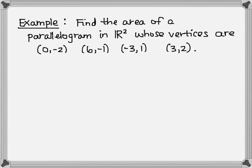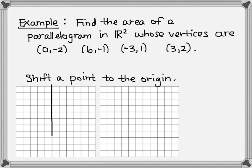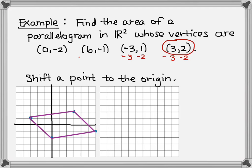Here's our first example. We want to find the area of a parallelogram in R2 whose vertices are (0, −2), (6, −1), (−3, 1), and (3, 2). Step one: shift a point to the origin. I'm going to graph the parallelogram first to see what it looks like. I connect the four points with straight lines to get my parallelogram. I'll pick the point (3, 2) to shift — you could pick any of them. I subtract 3 from the x and 2 from the y, and I do it to all four points.